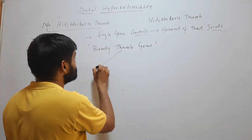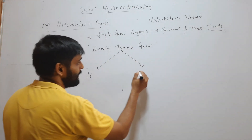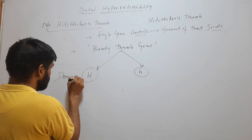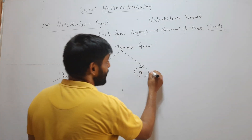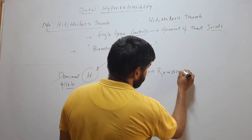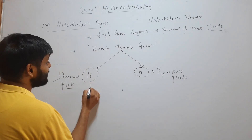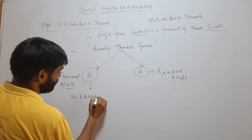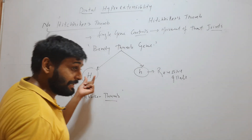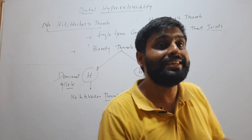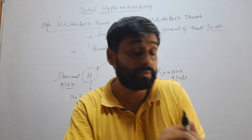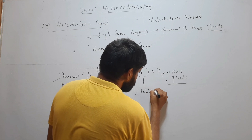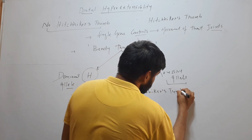This gene has two alleles: capital H and small h. Capital H is the dominant allele, and small h causes hitchhiker's thumb — meaning this recessive allele causes hitchhiker's thumb. The dominant allele (capital H), if present, causes no hitchhiker's thumb — the person can't bend their thumb.